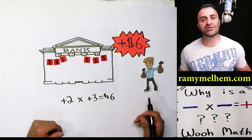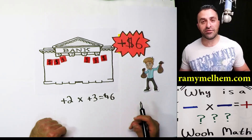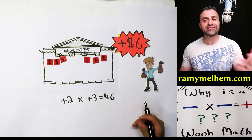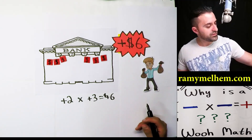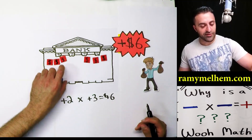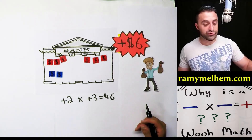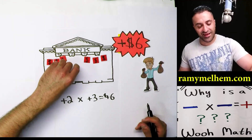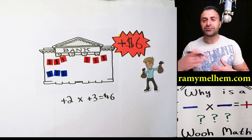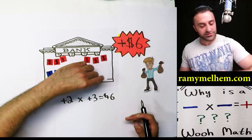But then he goes to the store and uses his credit card. Remember, credit cards are loans. So he buys something for $3 on his credit card — say a pair of shoes for $3. Then he goes to another store and sees a nice shirt — another $3.